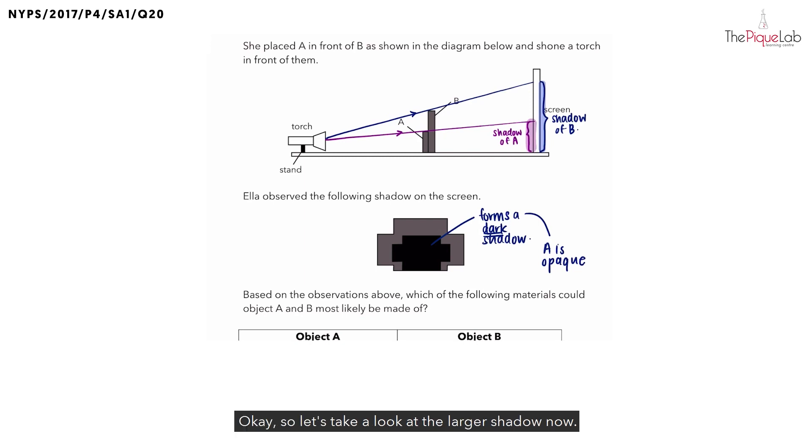Let's take a look at the larger shadow now. For the larger shadow, what we can see is that this time the shadow is not dark but faint. Object B forms a faint shadow. As mentioned earlier, if a faint shadow is formed, what can you tell me about the transparency of B? Is it opaque or is it translucent? B must be translucent.